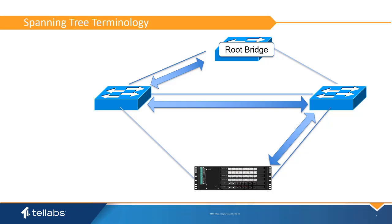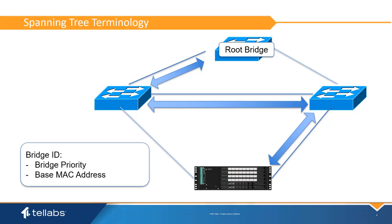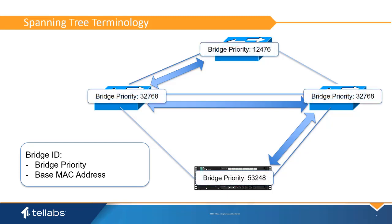Each switch or bridge participating in the spanning tree is given a bridge ID. The bridge ID is an 8-byte field that is a combination of the bridge priority and base MAC address of the device. The bridge priority defaults to 32768 for every switch. If there is a bridge priority tie, then the base MAC address is considered.